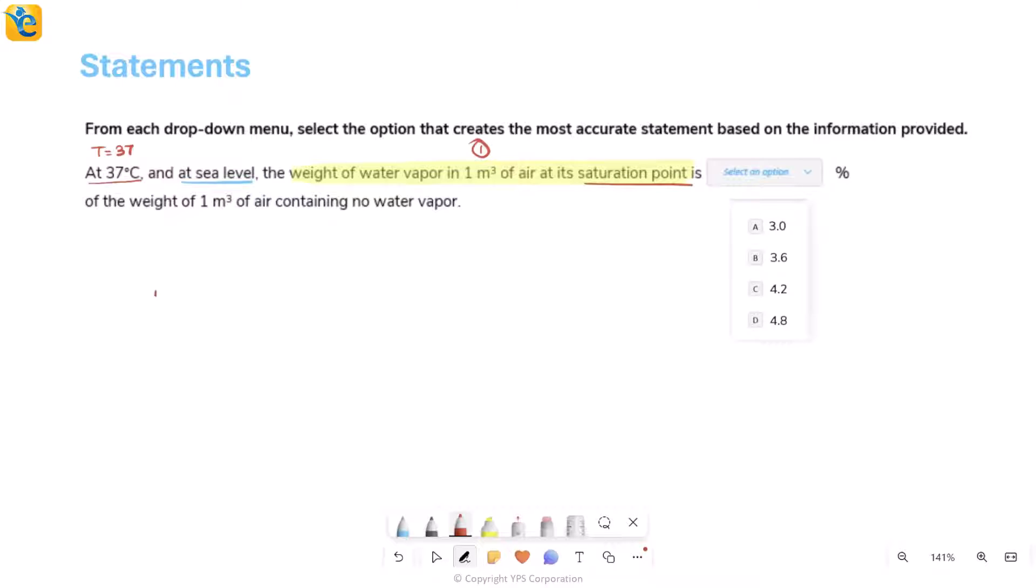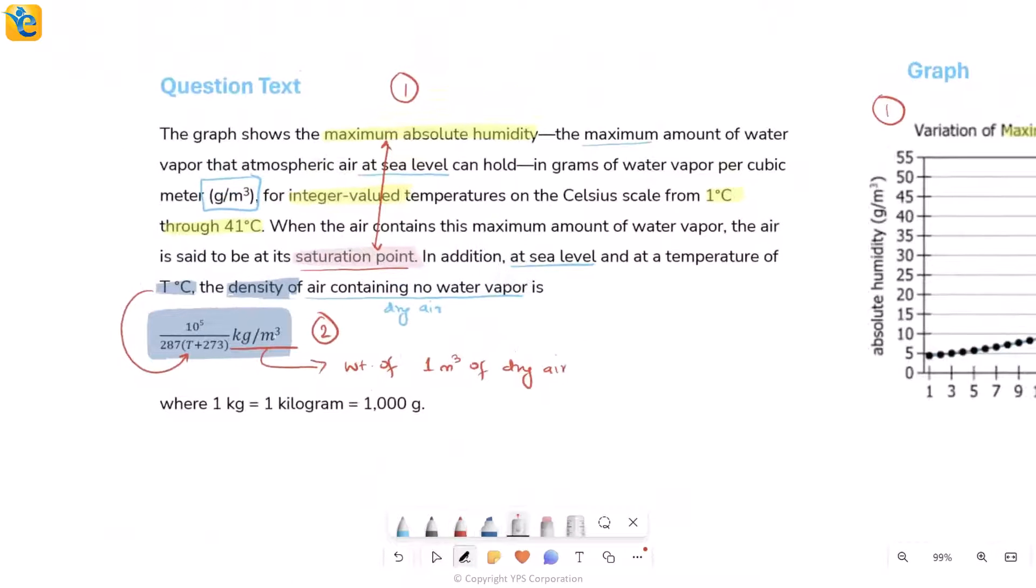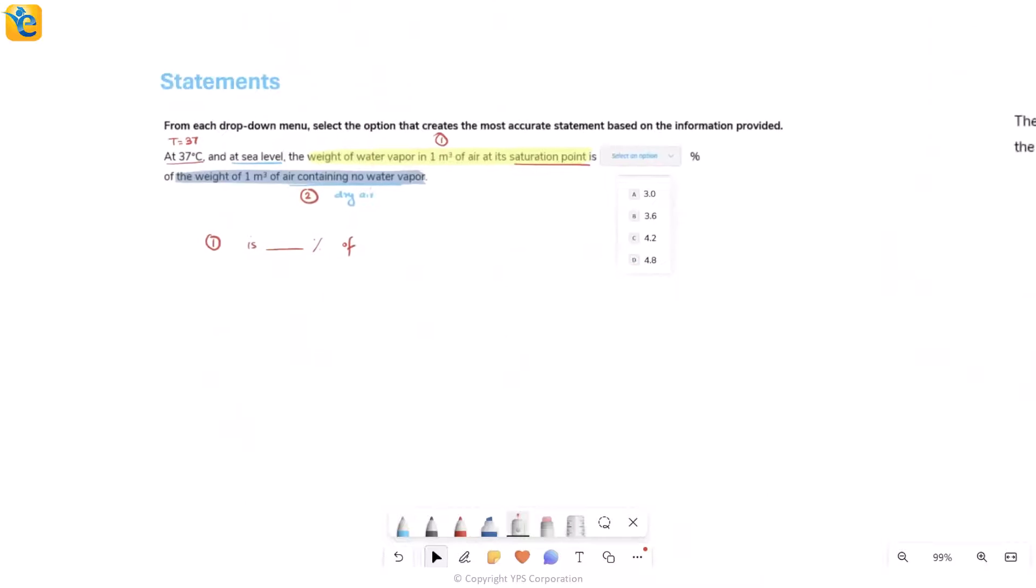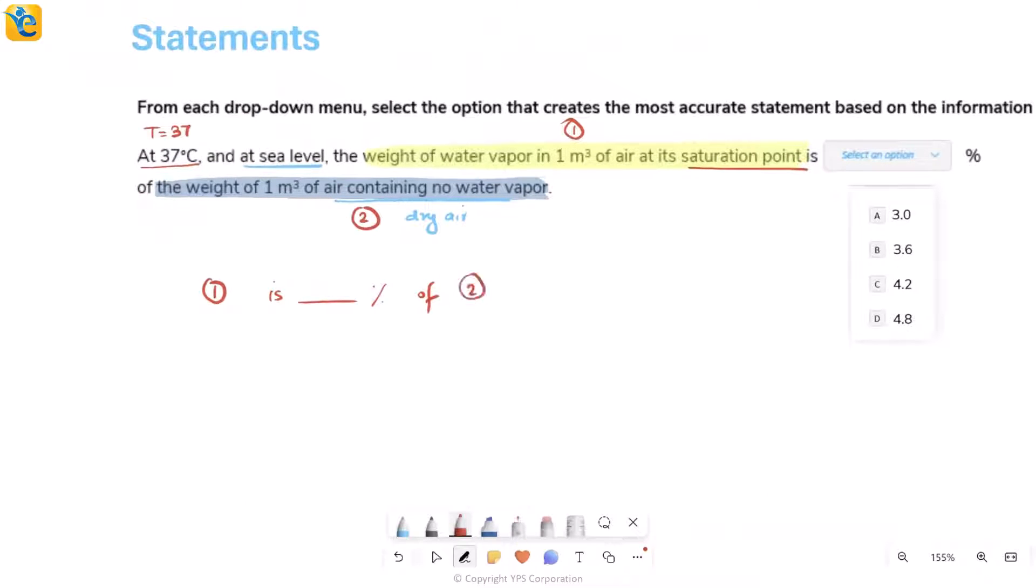This entire quantity, let me call it one, is dash percent of, let's read further, and here you see of the weight of one meter cube of air containing no water vapor. Wasn't this exactly what we call dry air? This is the information we had numbered two in our question text. The maximum absolute humidity connected with saturation point and density for the second case. It's these two quantities then, what I get from one and what I get from two, and I have to see one is what percent of two. Simply, this is going to be whatever one is divided by whatever two is times 100. I need to find each of these values one by one.